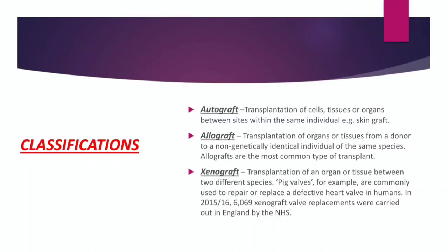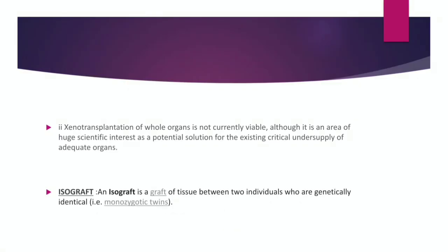A xenograft is a transplantation organ from animals. When we use animals such as pigs, they are now being used successfully in our body, though composite procedures are still challenging. So pigs are used culturally for xenograft transplantation. An isograft involves identical twins — organs are transferred between twins. If you take a kidney, you get a matching kidney; if you take a heart, you get a matching heart.